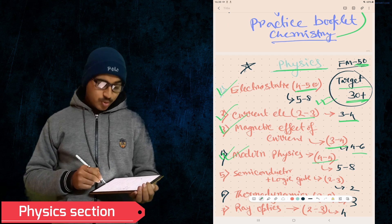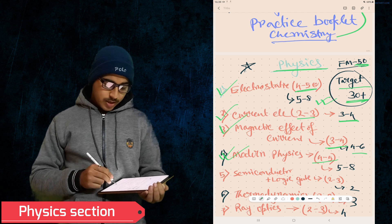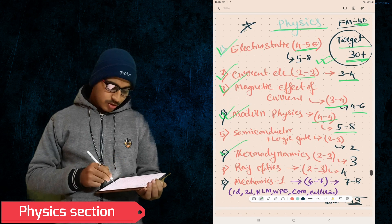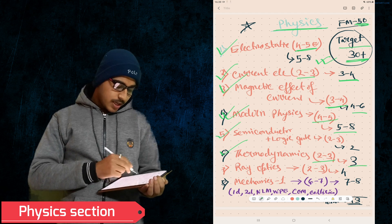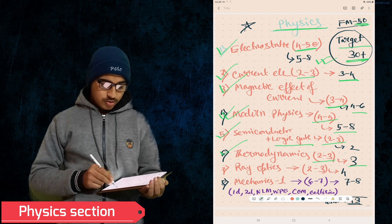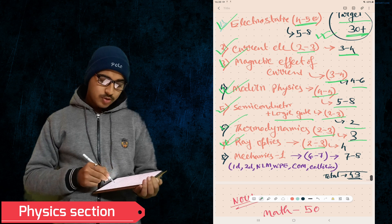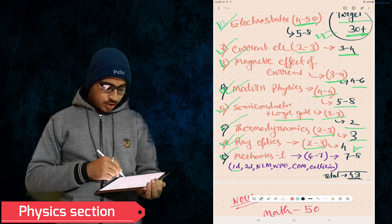In Modern Physics, also four to five questions. Modern Physics includes all those three to four chapters, so five to eight marks. In Thermodynamics, two to three questions, three marks approximately. In Semiconductor and Logic Gate chapter, two to three simple questions, two marks I'm assuming. In Optics also, two to three questions, almost four marks.